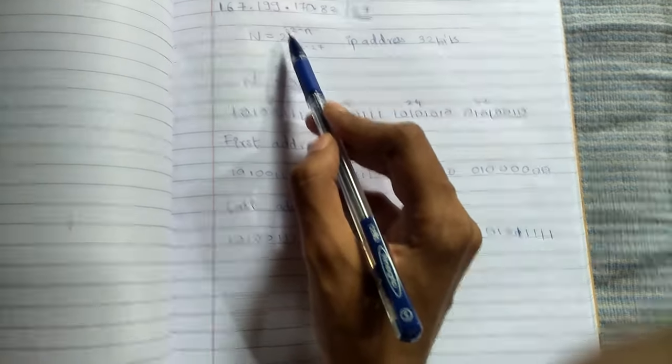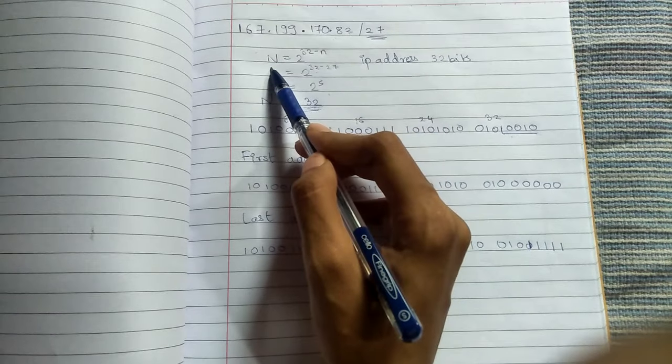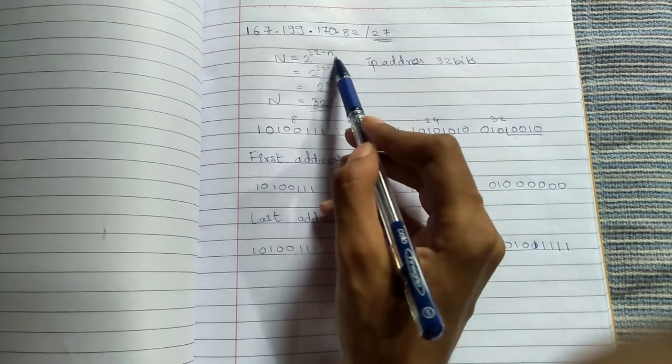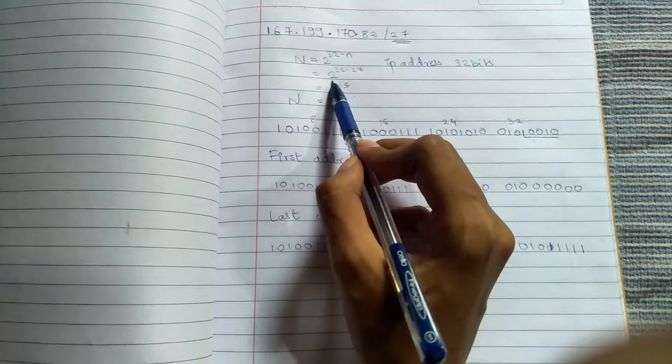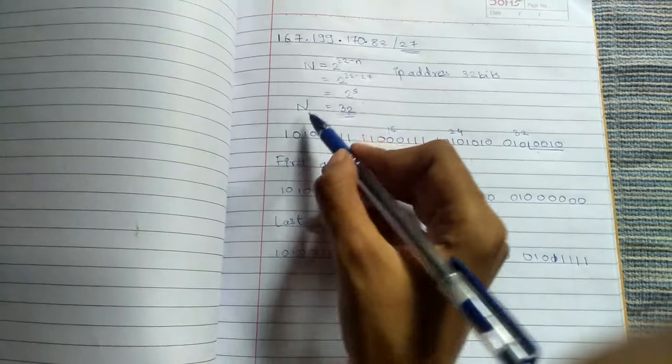To find the number of addresses in the network, we have a formula: 2 raised to 32 minus n, where n represents the prefix, that is 27. So after putting the value in this formula, we get the number of addresses in a network.